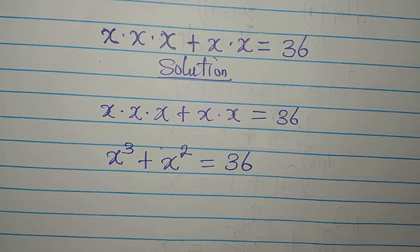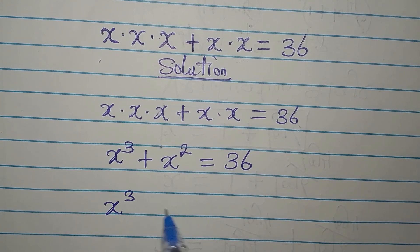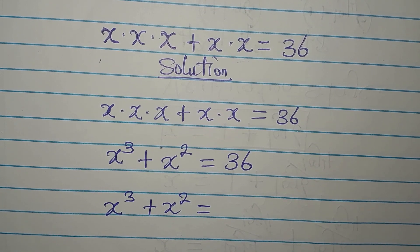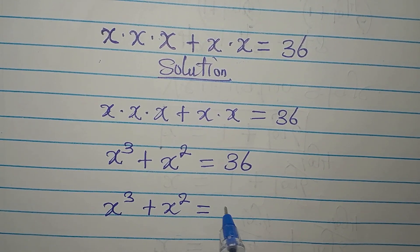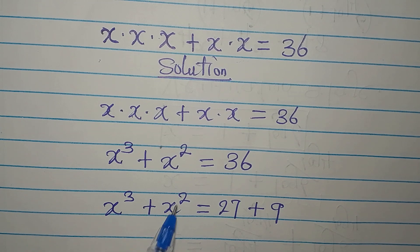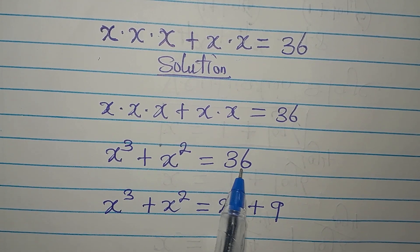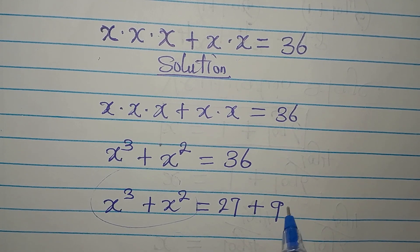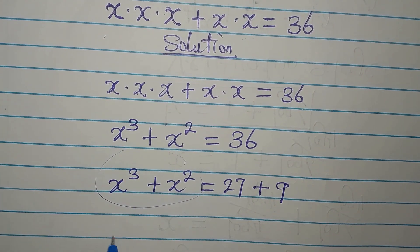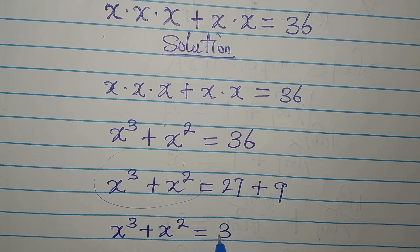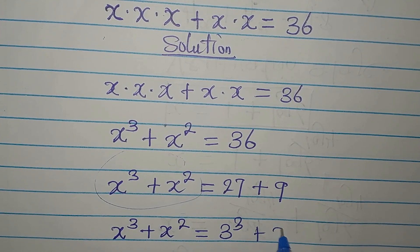We have x to the power of 3 plus x to the power of 2. Before breaking 36 down, we need to think about it — 36 can be broken into 27 and 9. It could have been 30 and 6, but that won't give us something in the right form. So we use 27 and 9, giving us x³ + x² = 3³ + 3².